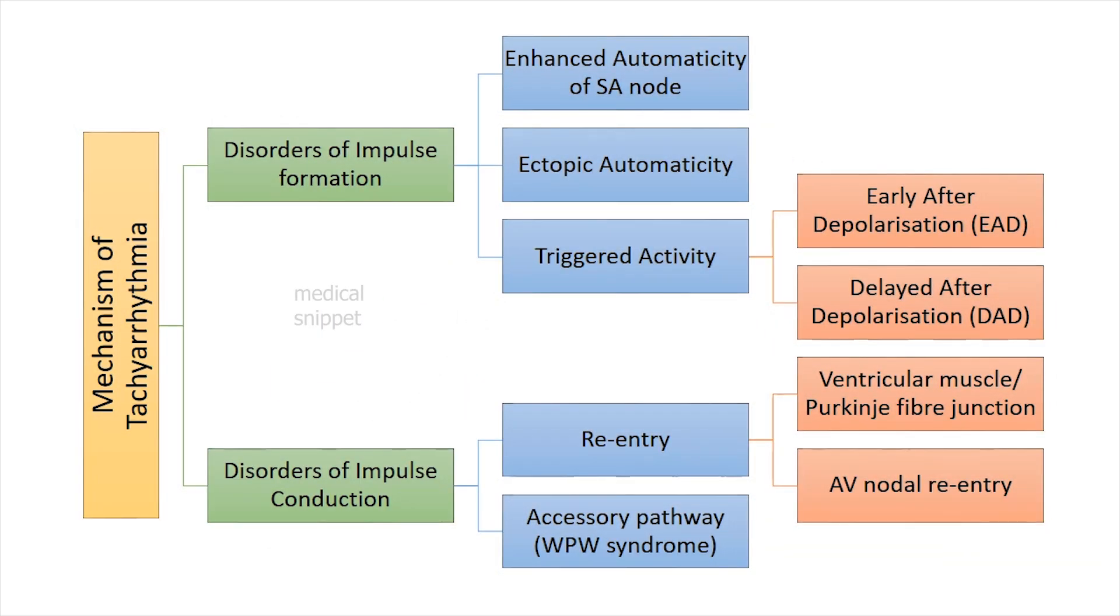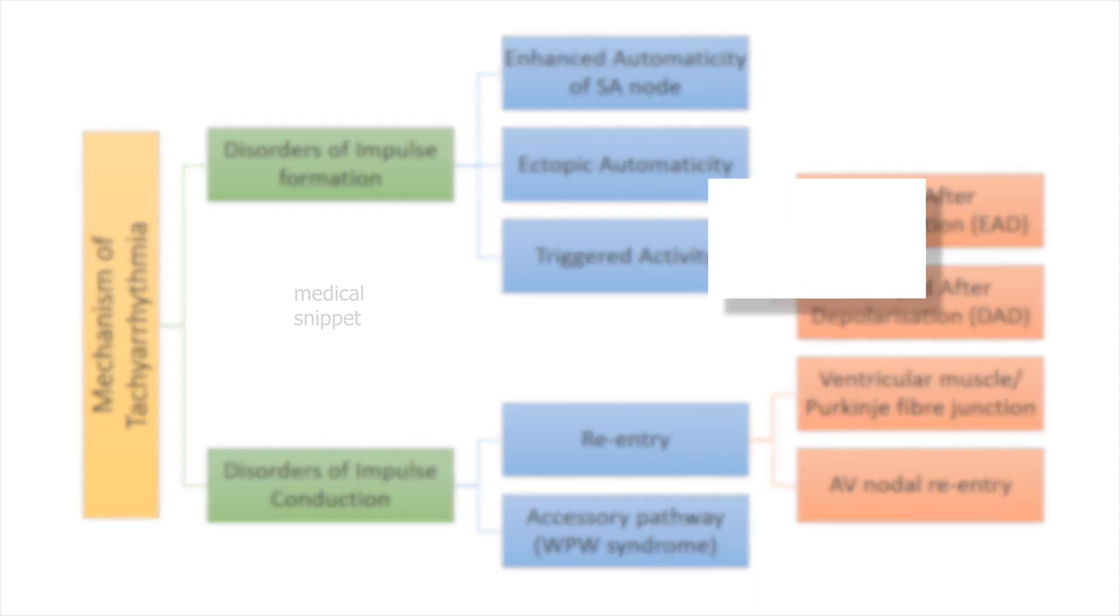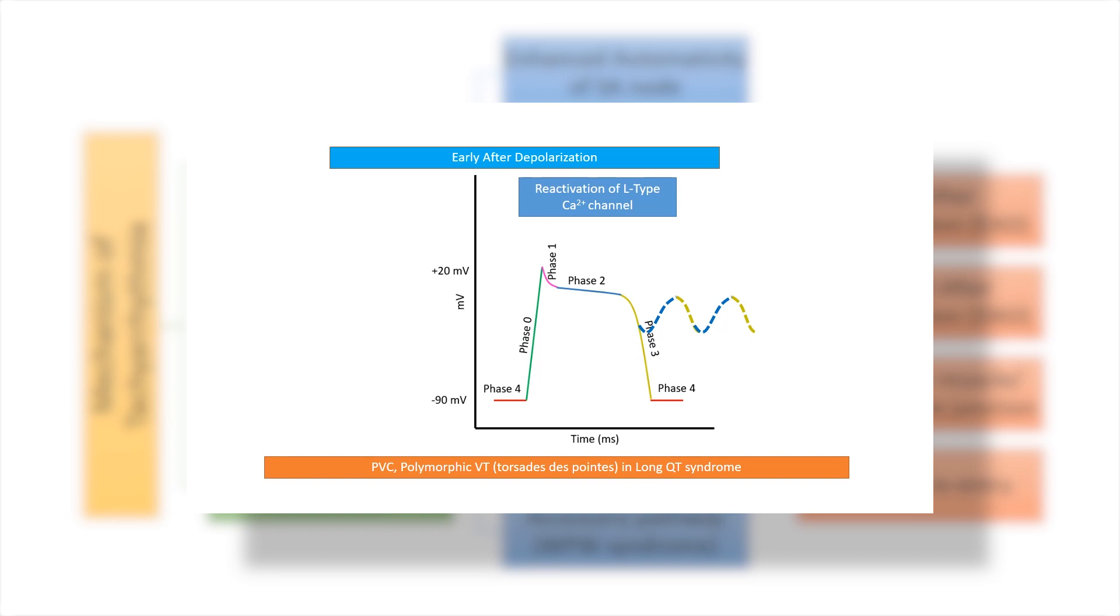After depolarizations are membrane voltage oscillations. If after depolarizations are of adequate magnitude, they can trigger premature action potentials. After depolarization occurring in phase 2 or 3 is called early after depolarization. It is due to reactivation of L-type calcium channels. It is associated with increased repolarization time as seen in long QT syndrome. It can cause premature ventricular contractions and polymorphic VT.